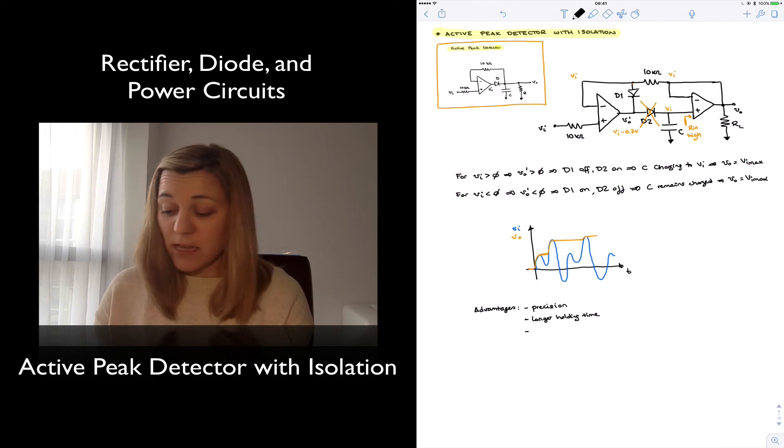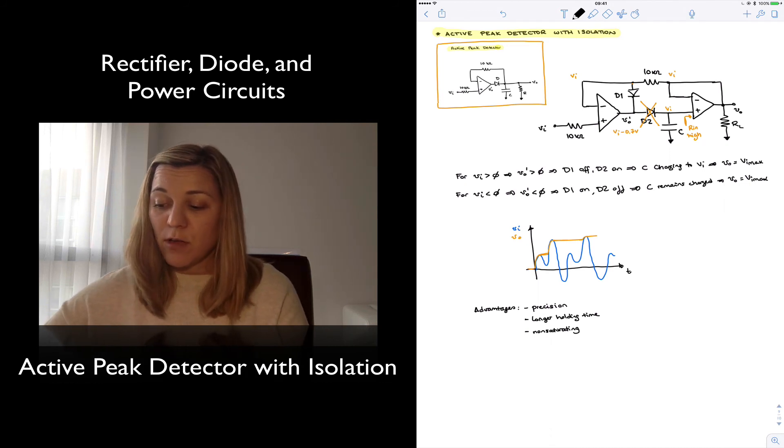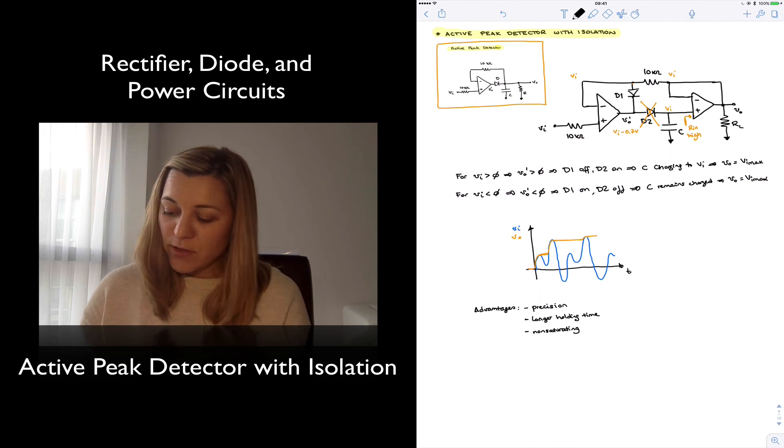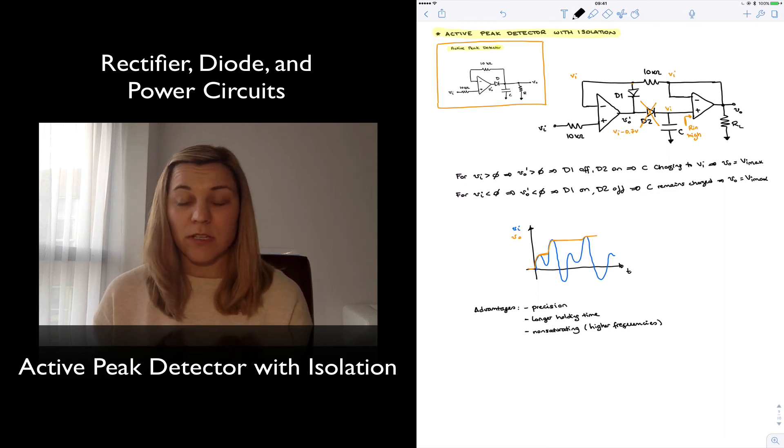And also notice that it is a non-saturating version of the circuit, meaning the negative feedback loop is never open in the circuit, it is never broken. During half of the cycle, D2 is on and so the negative feedback loop is closed through D2 and then the second op-amp. For negative input signals, then the feedback loop is closed through diode D1. So the op-amp never goes into saturation. And therefore it just means that it can operate at higher frequencies than saturating counterparts.